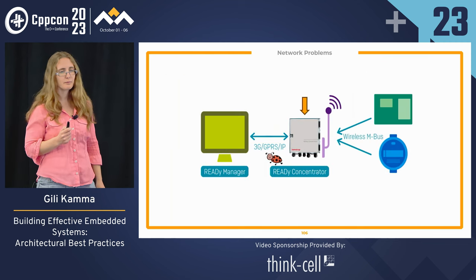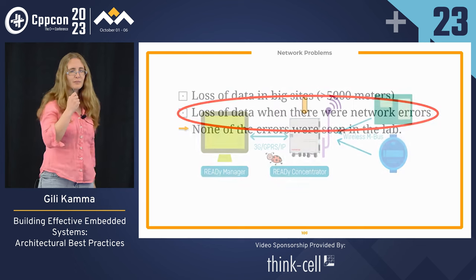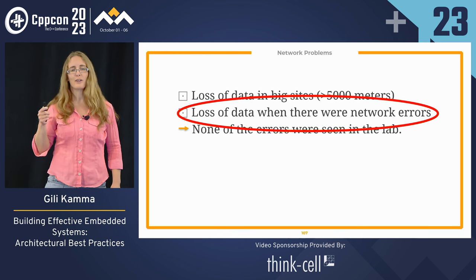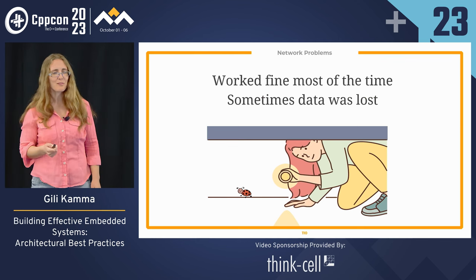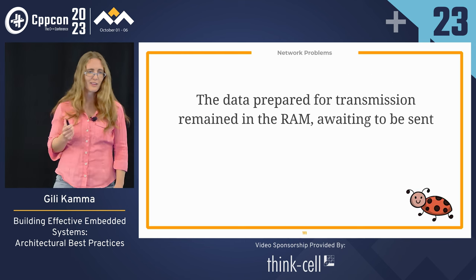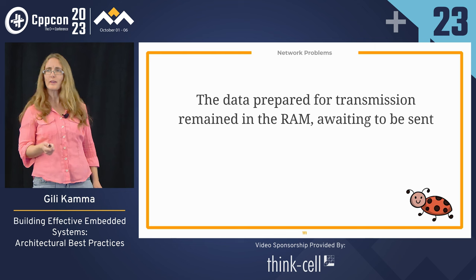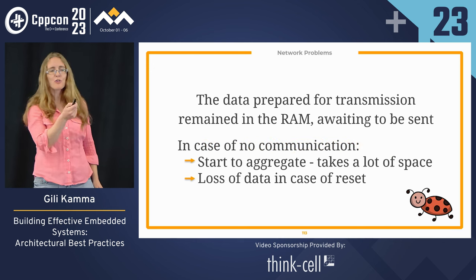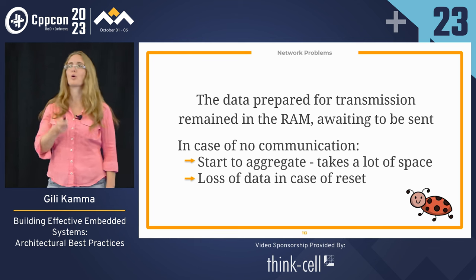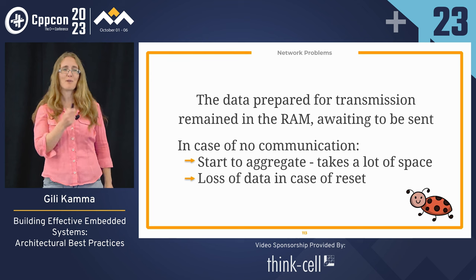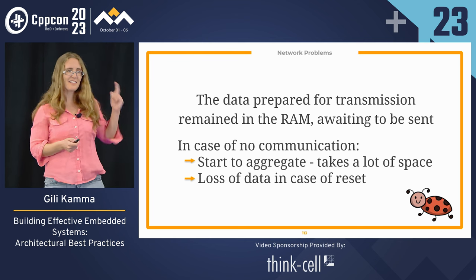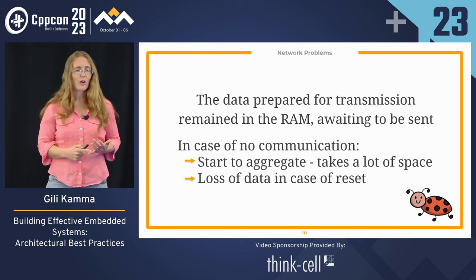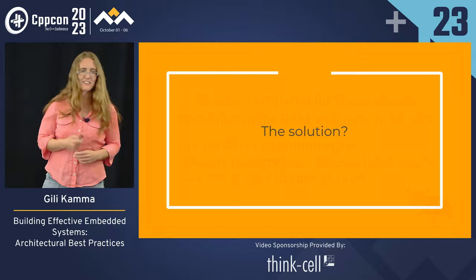Network problems. Going back to my system — the problem now is loss of data when there were network errors. It worked fine most of the time, but sometimes data was lost. The data prepared for transmission remained in RAM awaiting to be sent. The problem: in case of no communication, it started to aggregate and take a lot of space. At some point there wasn't enough space and it crashed. Second issue: in case of a reset — which can happen due to power failure — all the data was lost even if nothing went wrong. This is very painful.